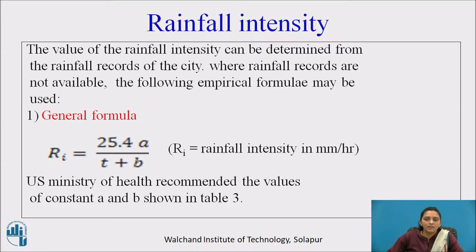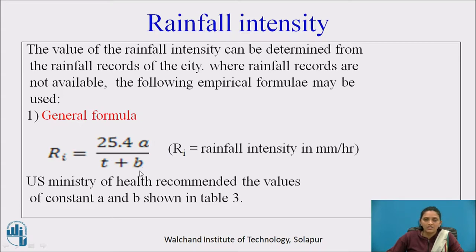For the calculation of rainfall intensity, the value can be determined from the rainfall record of that city. Where rainfall records are not available, the following empirical formula is used: R_i = 25.4 × A / (T + B), where A and B are constants from Table 3 depending on the duration of rainfall, and T is the duration of rainfall.